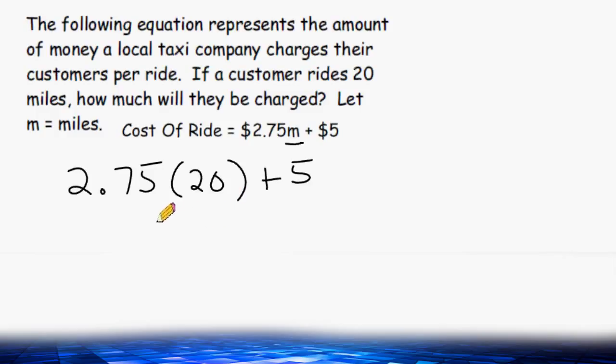What we have to do first is multiply $2.75 by 20 and then add $5 on at the end. So let's take $2.75 and multiply it by 20.